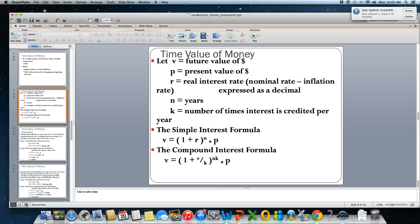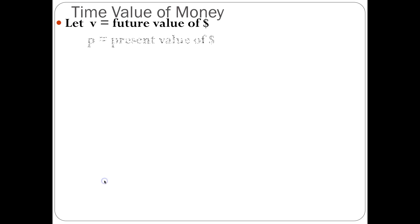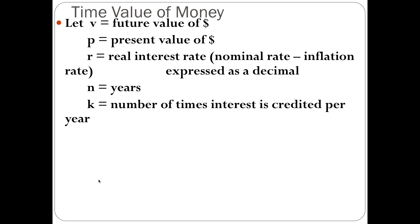Next, we're going to look at the time value of money equations. You might have seen these in your Algebra 1 or Algebra 2 classes — they're pretty popular problems. We're going to have some variables: V equals the future value of money, P equals the present value of money, R is the real interest rate — which equals the nominal rate minus the inflation rate, expressed as a decimal — N is the number of years, and K is the number of times interest is credited per year.